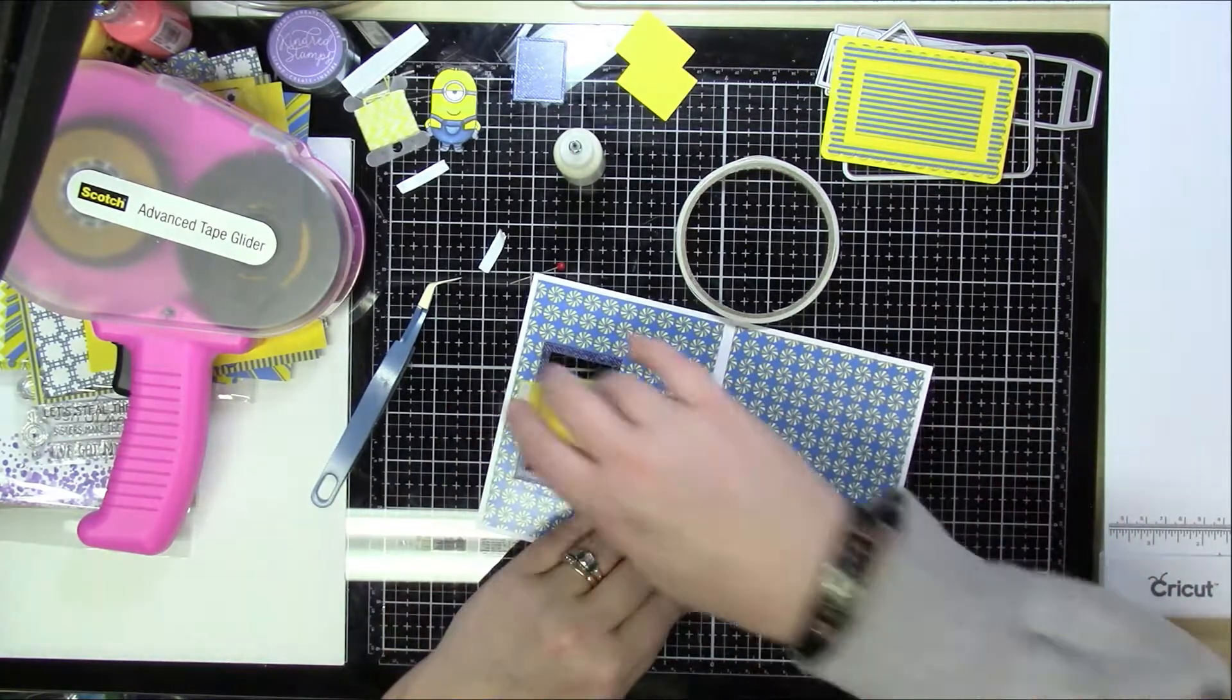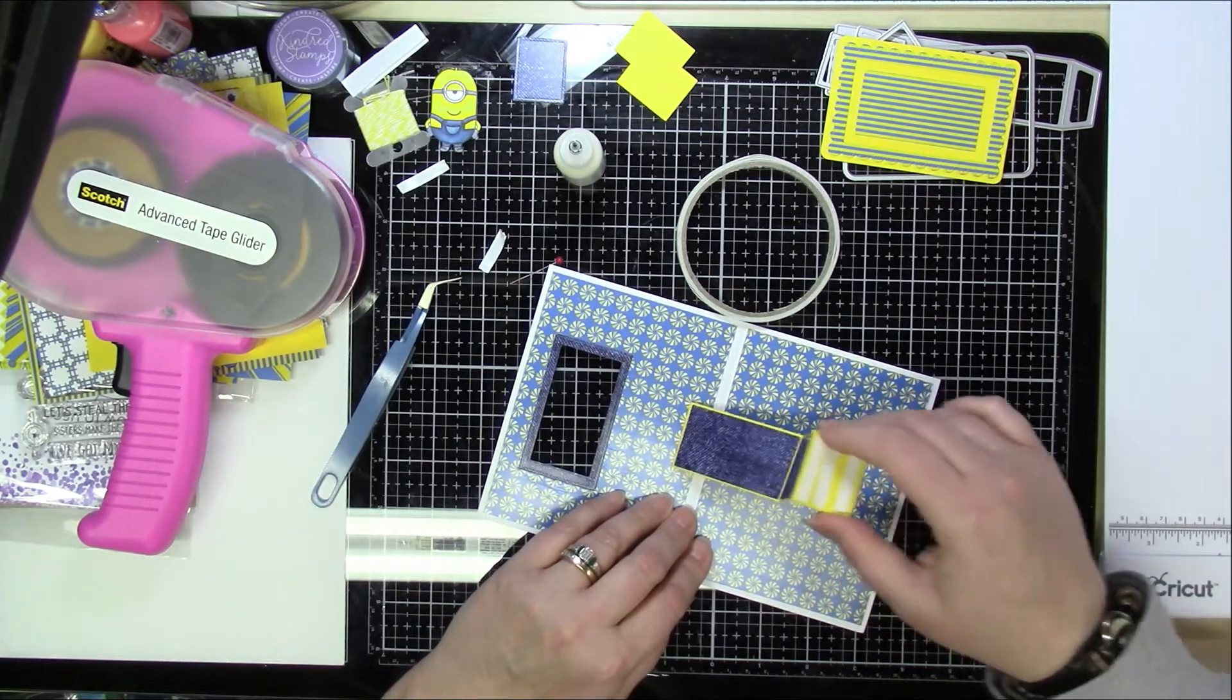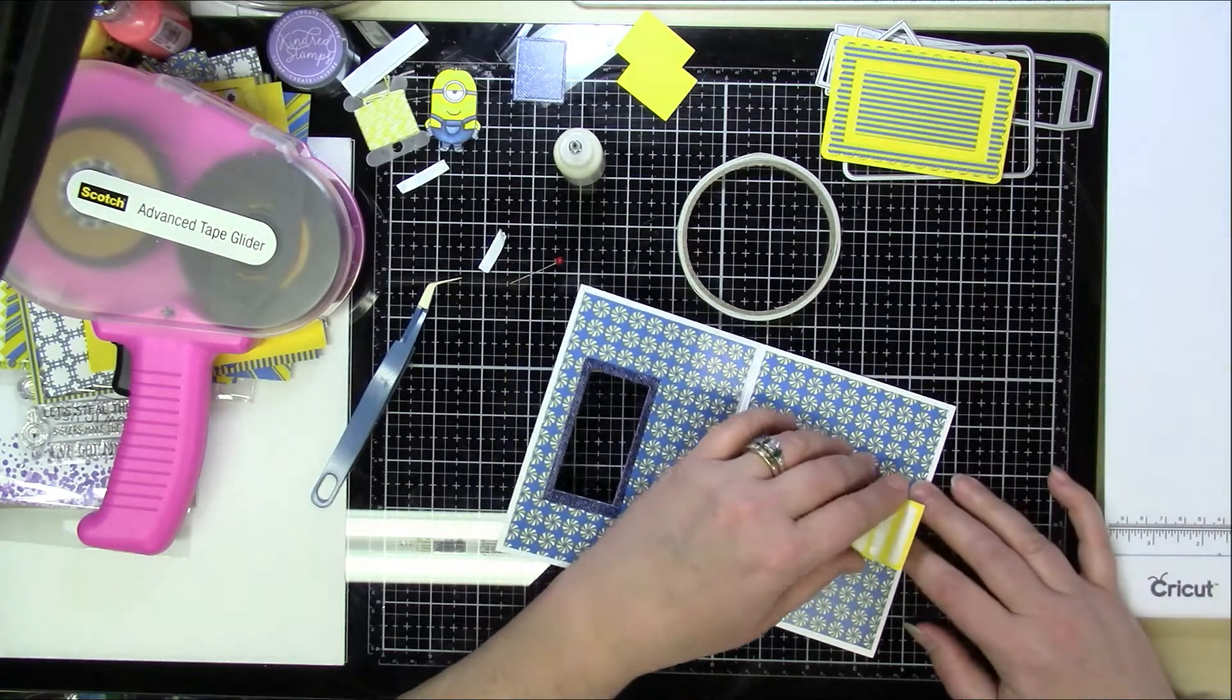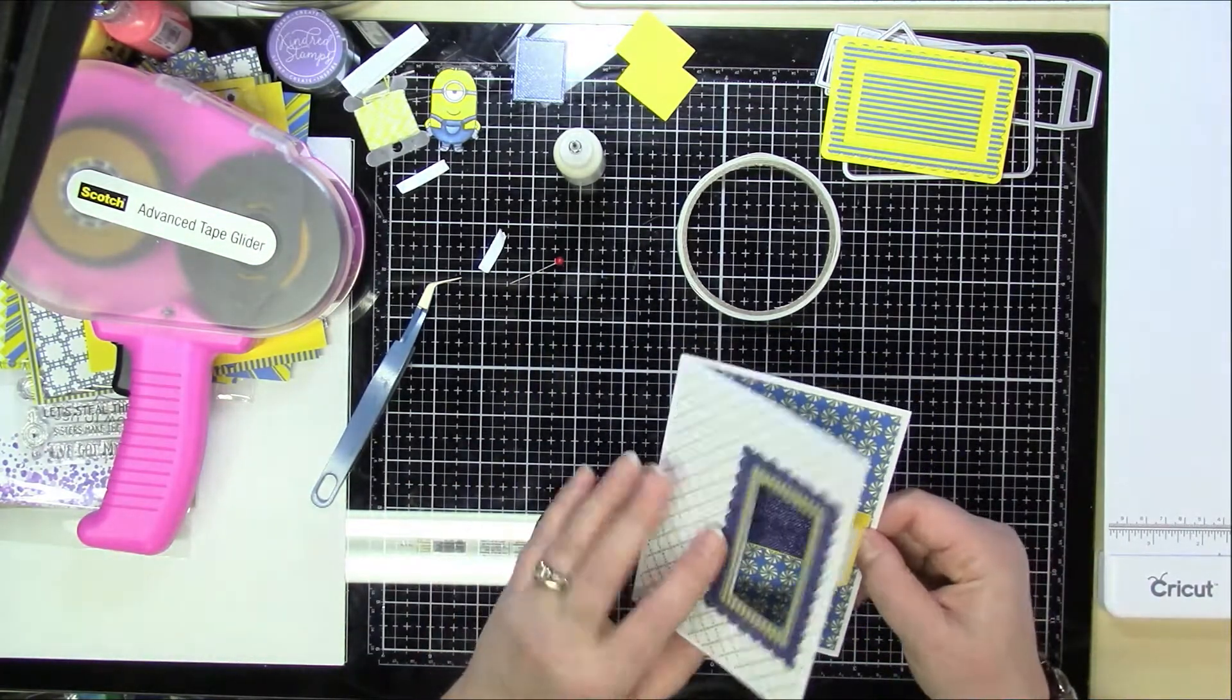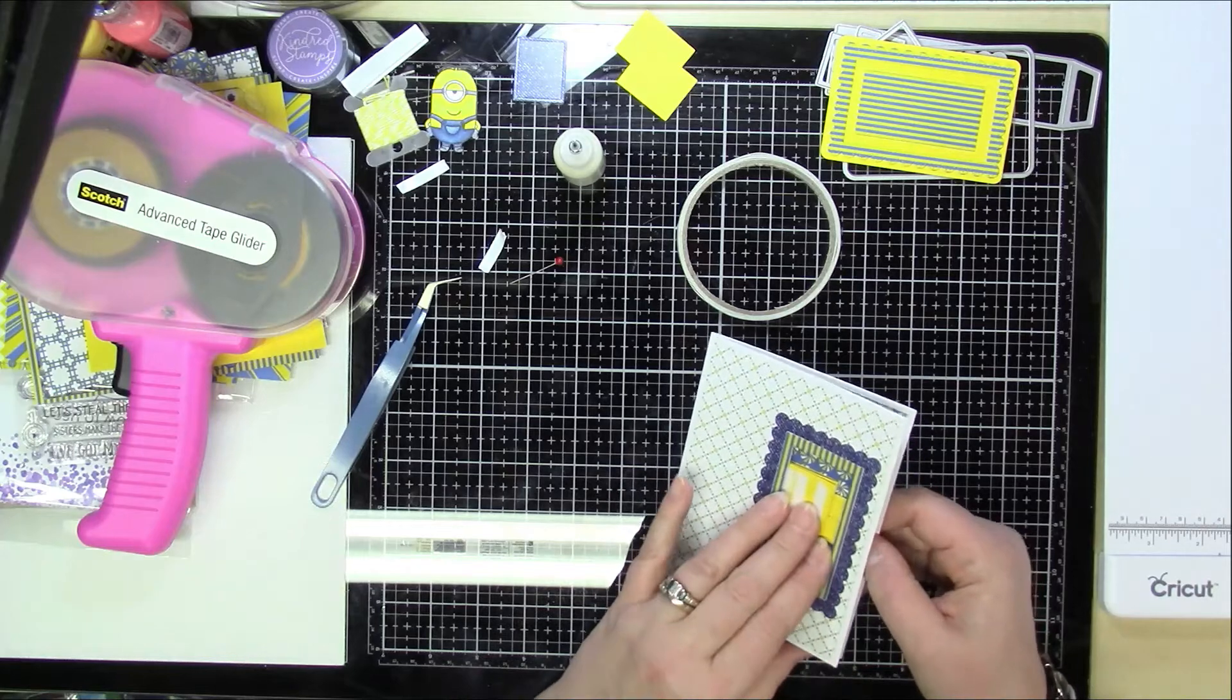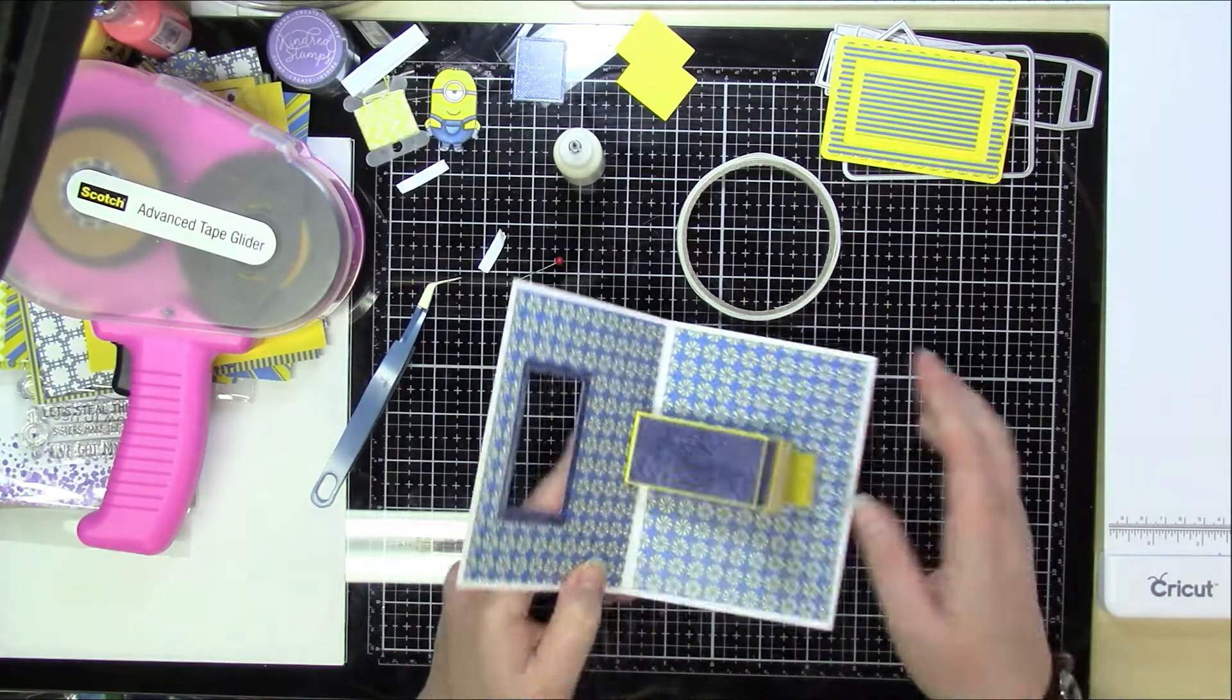So that's it. That's all you have to do with that. Now, for the other side, you're going to pretty much do the same thing, but you're just going to flip it over to the other side. So make sure your mechanism is folded up where it's supposed to be.